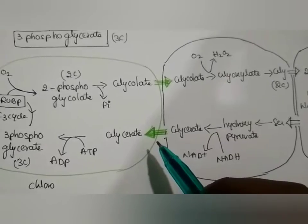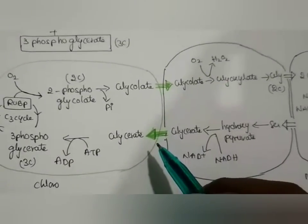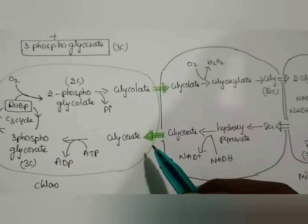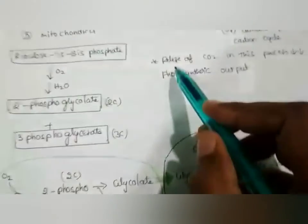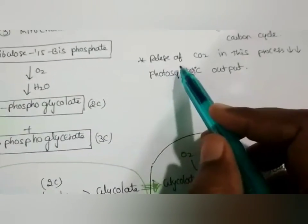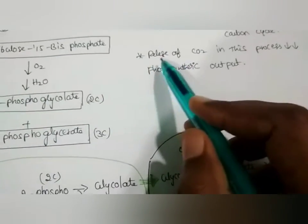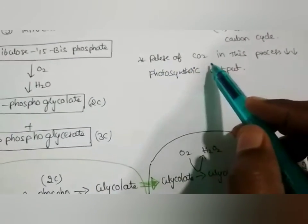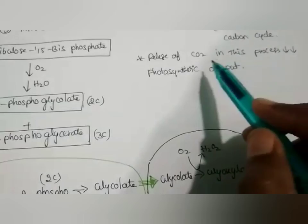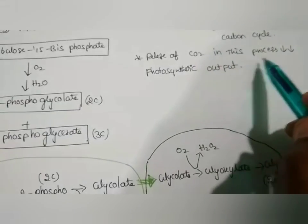When compared with C3 plants, C2 plants are lower in productivity because C2 plants release CO2 in this process.